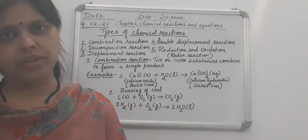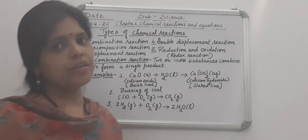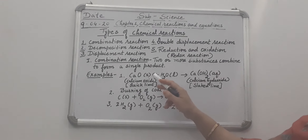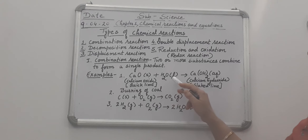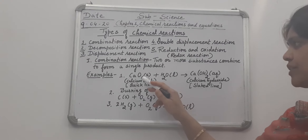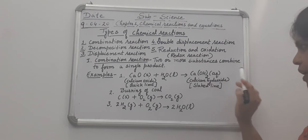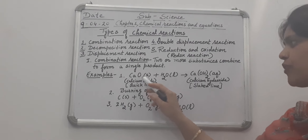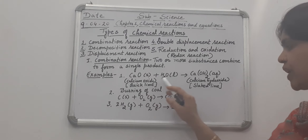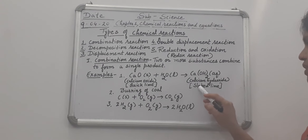Let's look at examples of combination reactions. For example, calcium oxide (CaO) when reacted with water, it forms calcium hydroxide. The common name of calcium oxide is quick lime. So quick lime when added to water forms calcium hydroxide, which is called slaked lime.